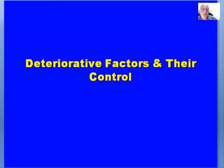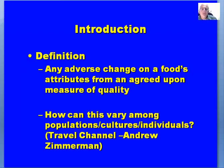In this video we're going to look at factors that result in deterioration — what we refer to as spoilage of food — and we'll talk briefly about control. As we look at food preservation throughout the semester, one of the things that food preservation methods do is they either prevent or slow down those factors that result in spoilage. Looking at a definition of deterioration, we might say that it's any adverse change on a food's attributes from an agreed-upon measure of quality.